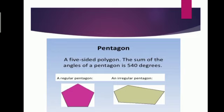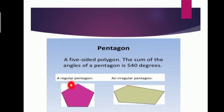After quadrilateral, we have pentagon. A pentagon is a five-sided polygon. The sum of the angles of a pentagon is equal to 540 degrees. Level 6, this is the regular pentagon and this is the irregular pentagon. It is regular because all sides are equal in length and all angles are equal.